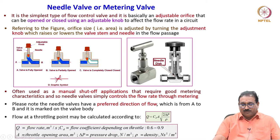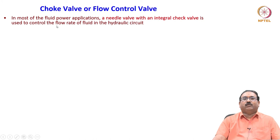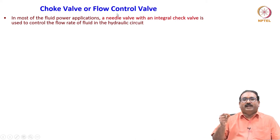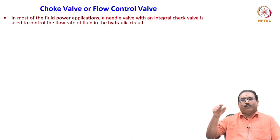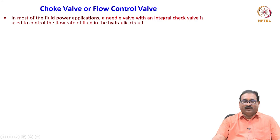In most fluid power applications, a needle valve with an integral check valve is used to control the flow rate of fluid in the hydraulic circuit — known as a choke valve or flow control valve. The previous needle valve only meters flow; as you open the valve, more flow goes to the actuator, and if you close it, flow is cut off. But in most applications, a needle valve with an integral check valve is required in the hydraulic circuit.